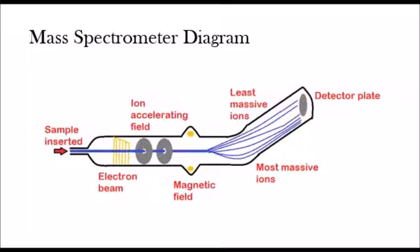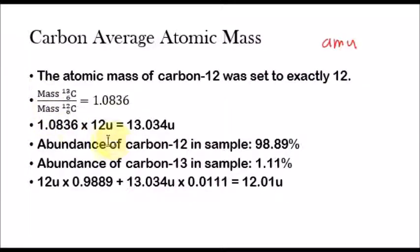And the detector plate said that the ratio of the mass between carbon-13 and carbon-12 was 1.0836. So from there, scientists were able to find out what the atomic mass of carbon-13 was. So in order to do that, they took this ratio here, and they multiplied it by the atomic mass of carbon-12, and they got the atomic mass of carbon-13 to be 13.034u.